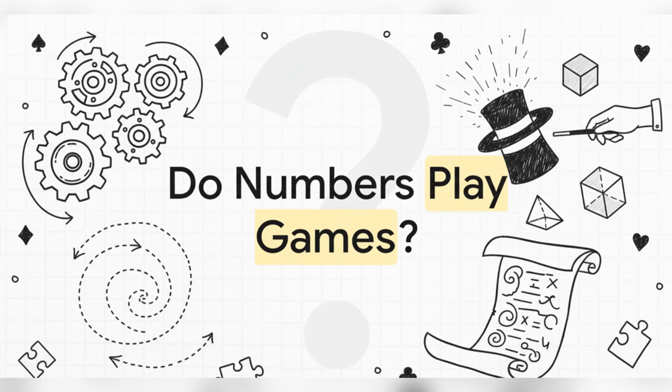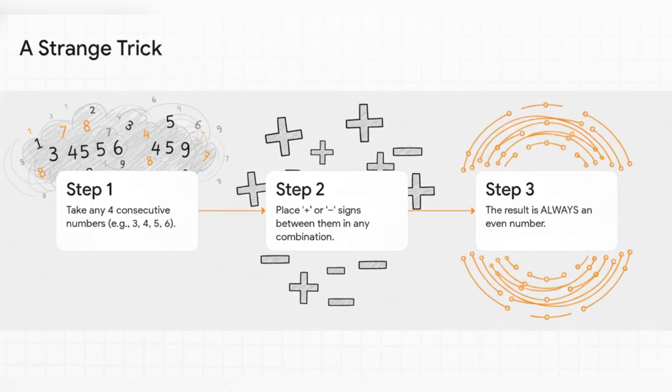I've got a couple of tricks for you that honestly feel way more like magic than they do math. Okay, first up I want you to picture any four numbers in a row. Let's just say 3, 4, 5, and 6. Now imagine you can stick plus or minus signs between them any way you want. You could do 3 + 4 - 5 + 6, or maybe 3 - 4 - 5 - 6. Doesn't matter.